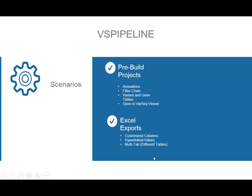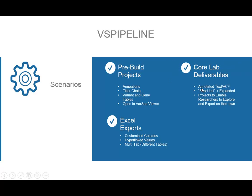Being able to get these beautiful, customized, and hyperlinked Excel spreadsheets is a powerful deliverable in which you may actually not use the project after that point — just simply pass that spreadsheet along, or in combination with the project. Core labs may also want to get annotated text files, VCF files, a combination of shortlist outputs as well as expanded outputs, being able to pass these projects on to researchers who might have their own licenses of VarSeq or might just be using it in viewer-only read-only mode to get to their own choices of what they want to export. So they can investigate any of these filters and run their own exports.